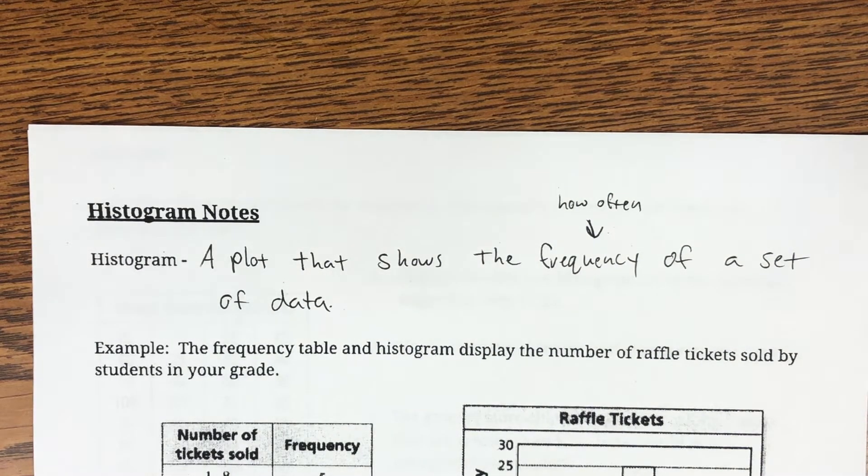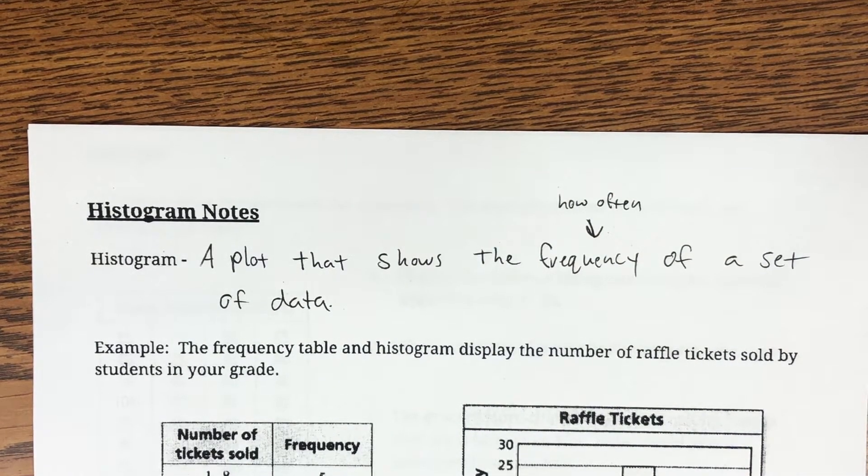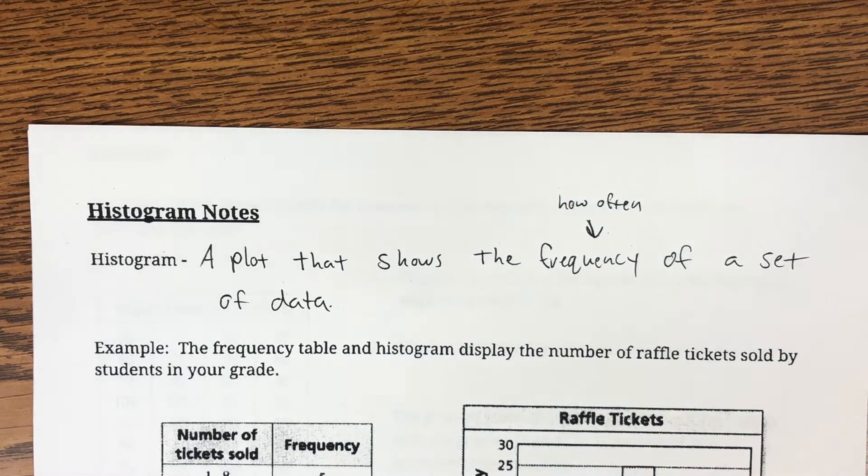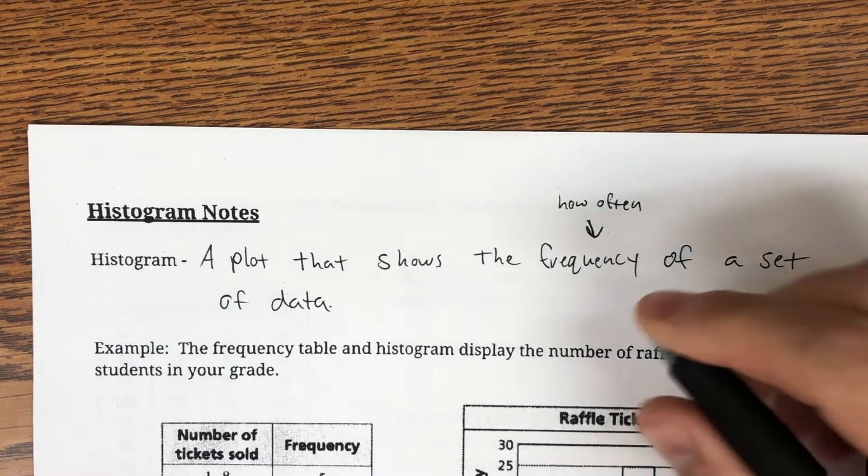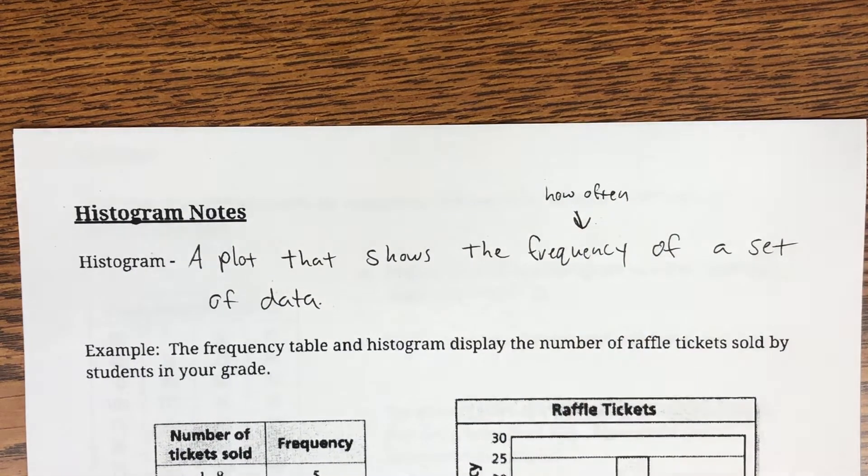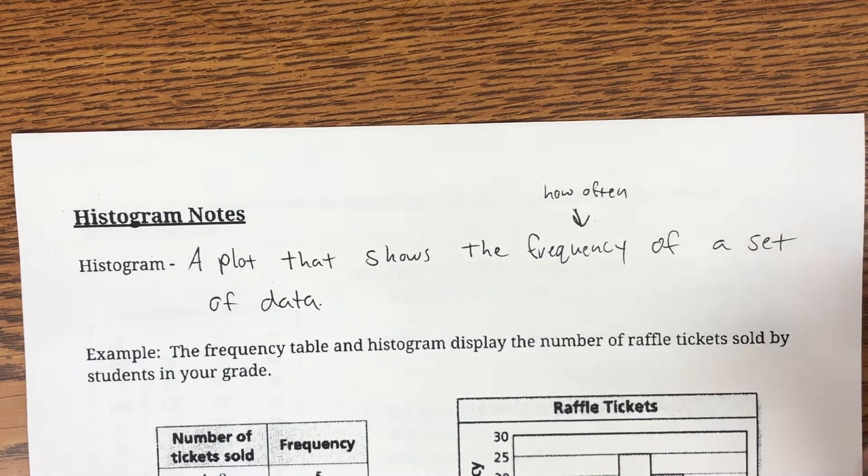All right, last video. Mr. Ahmed here. We are going to talk about histograms, and a histogram is a data plot that shows the frequency of a set of data. So the frequency really means just how often that something is occurring. And the first thing we're going to do is take a look at an example here.